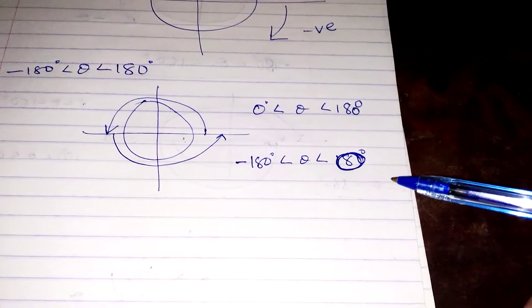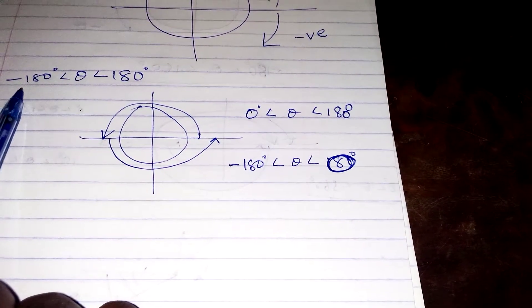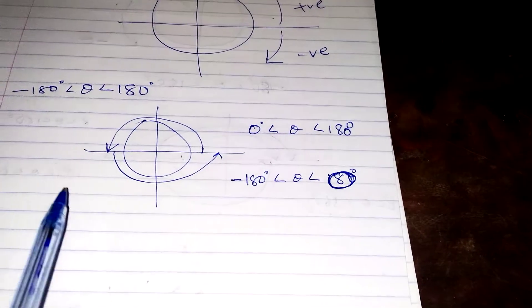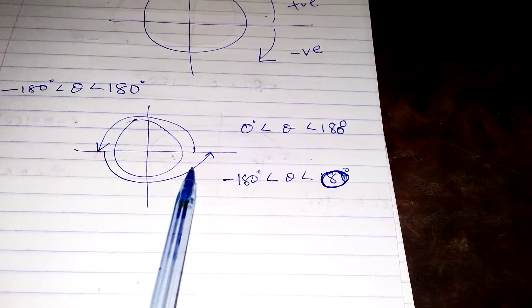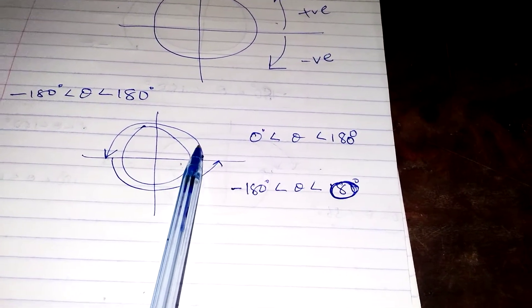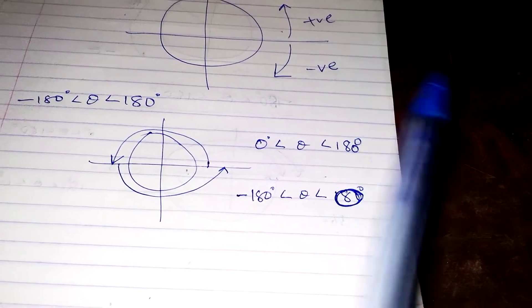Now, this means that for this interval from negative 180 up to positive 180, we shall break it into two. The first interval starts from negative 180 up to zero, which is this one here, and the second interval starts from zero up to 180, which is that one there.